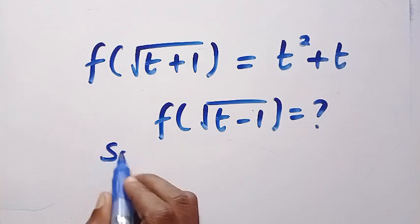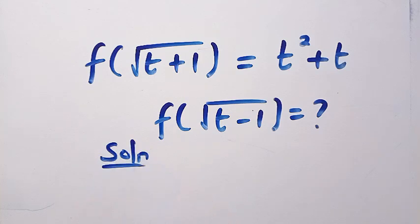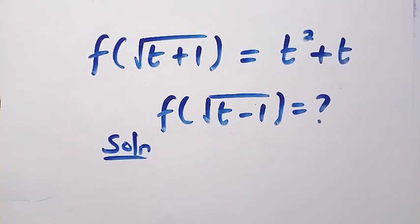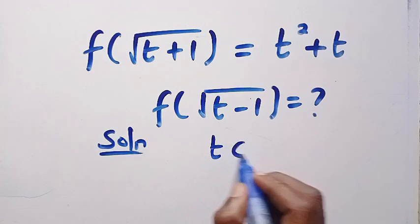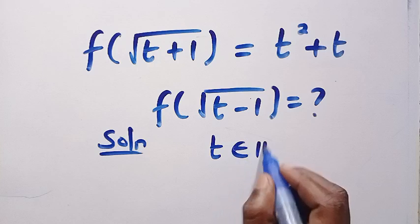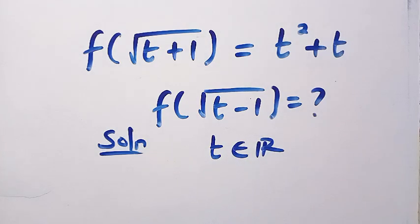If I consider the solution first, for the given question, we have a domain which is root t plus 1. Let's understand this — the domain values for root t plus 1, because every t here is a member of the real numbers. There is a restriction for complex numbers, that is why we have to define this domain very well.